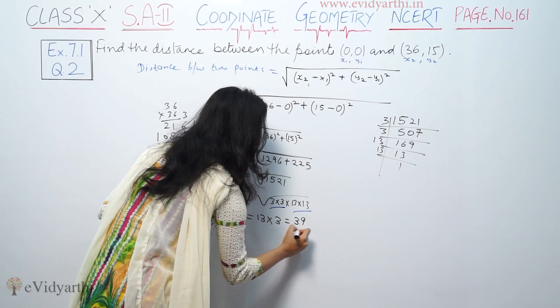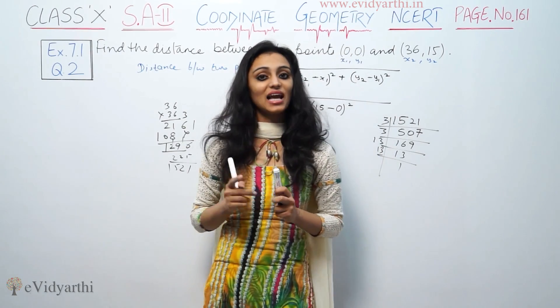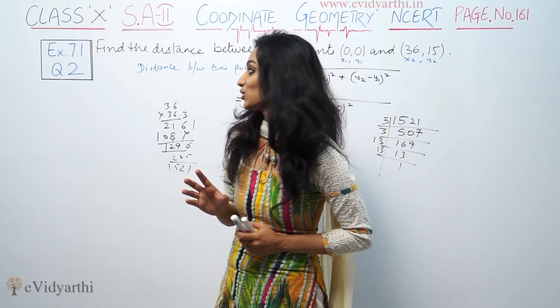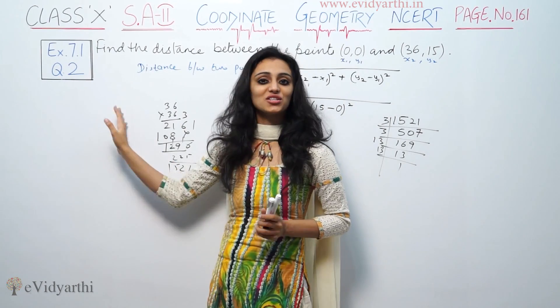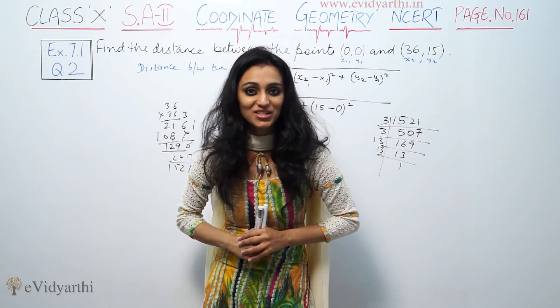13 times 3 is 39. So this is the answer. In these questions, we need to show both calculation and final values. This was question 7 from exercise 7.1. Do watch the next video for more questions. Goodbye.